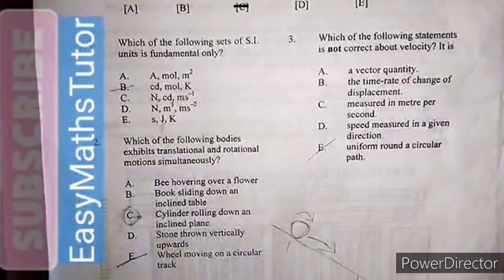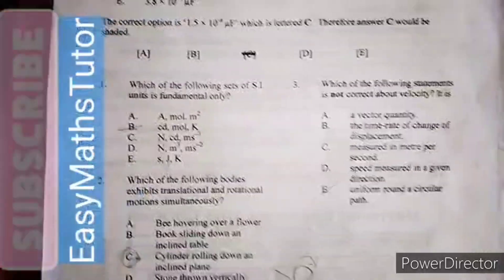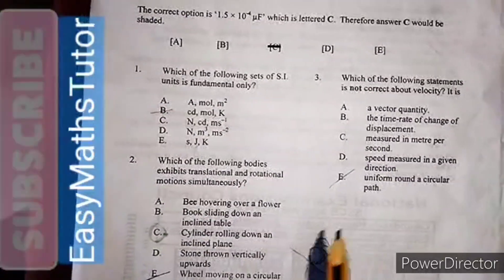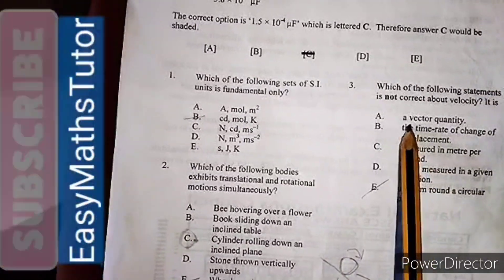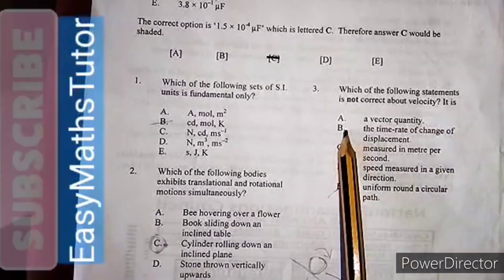Then we have the third question: Which of the following statements is not correct about velocity? Remember, we're selecting the option that is not correct.